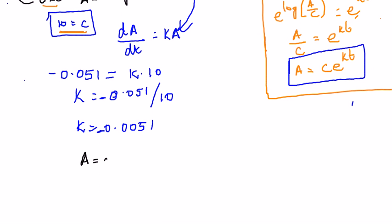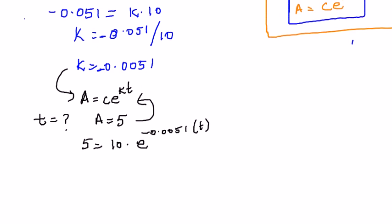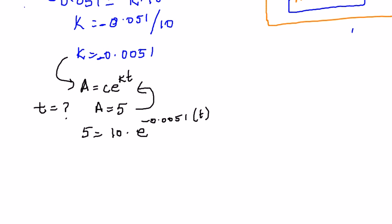Now substituting c = 10 and k = -0.0051 back into the equation, we want to find t when a = 5. So: 5 = 10 · e^(-0.0051t). This gives us 5/10 = e^(-0.0051t), which is 1/2 = e^(-0.0051t).